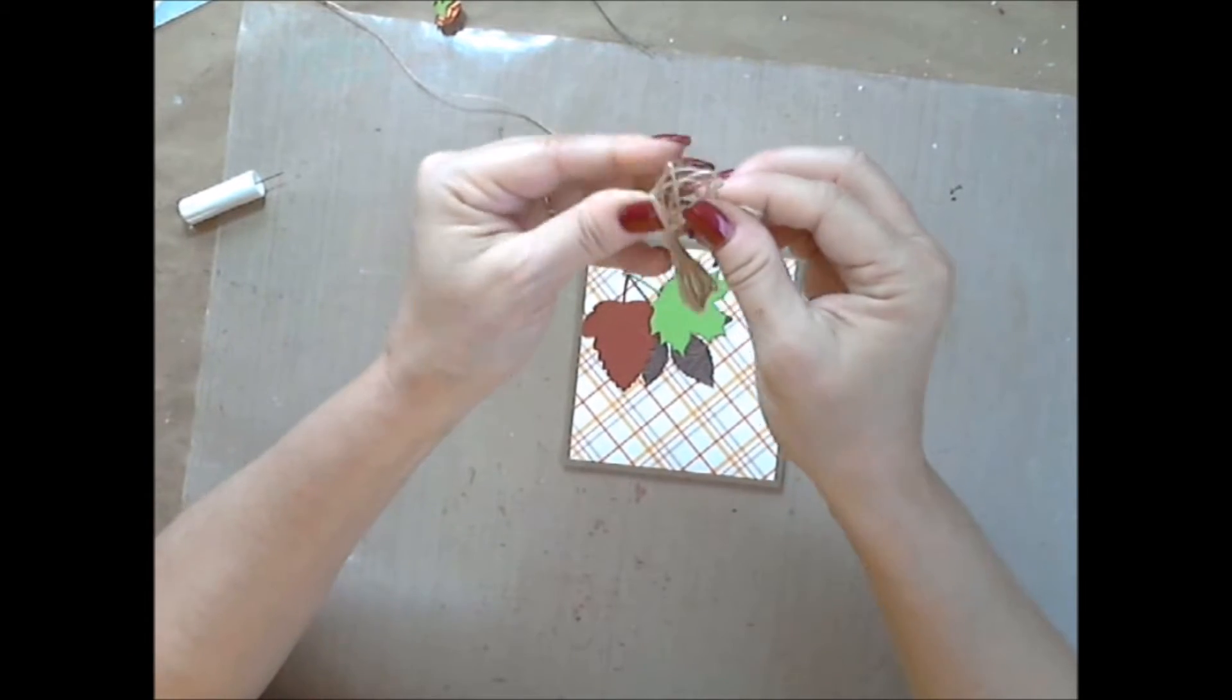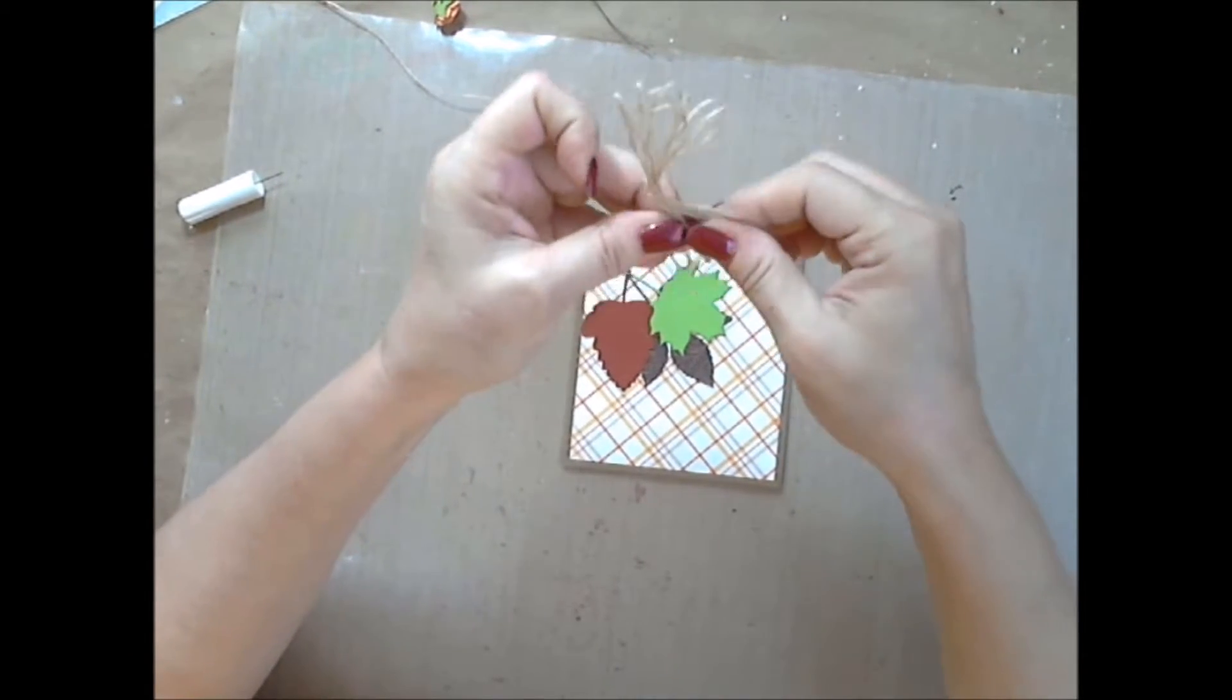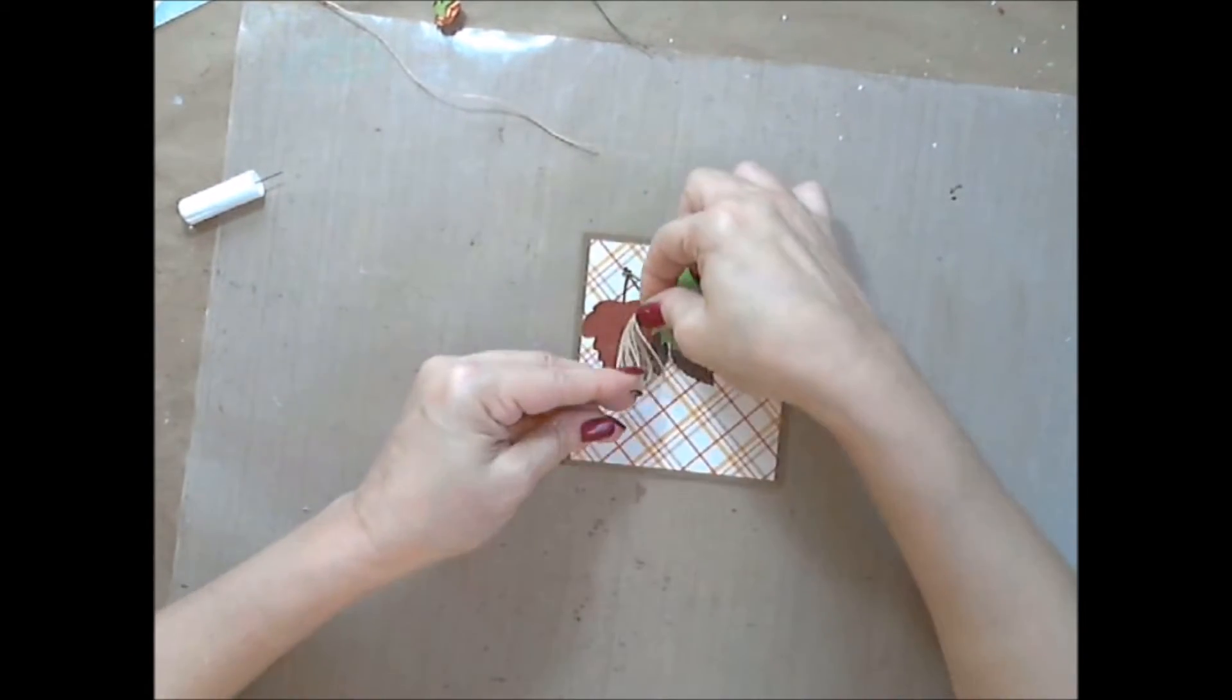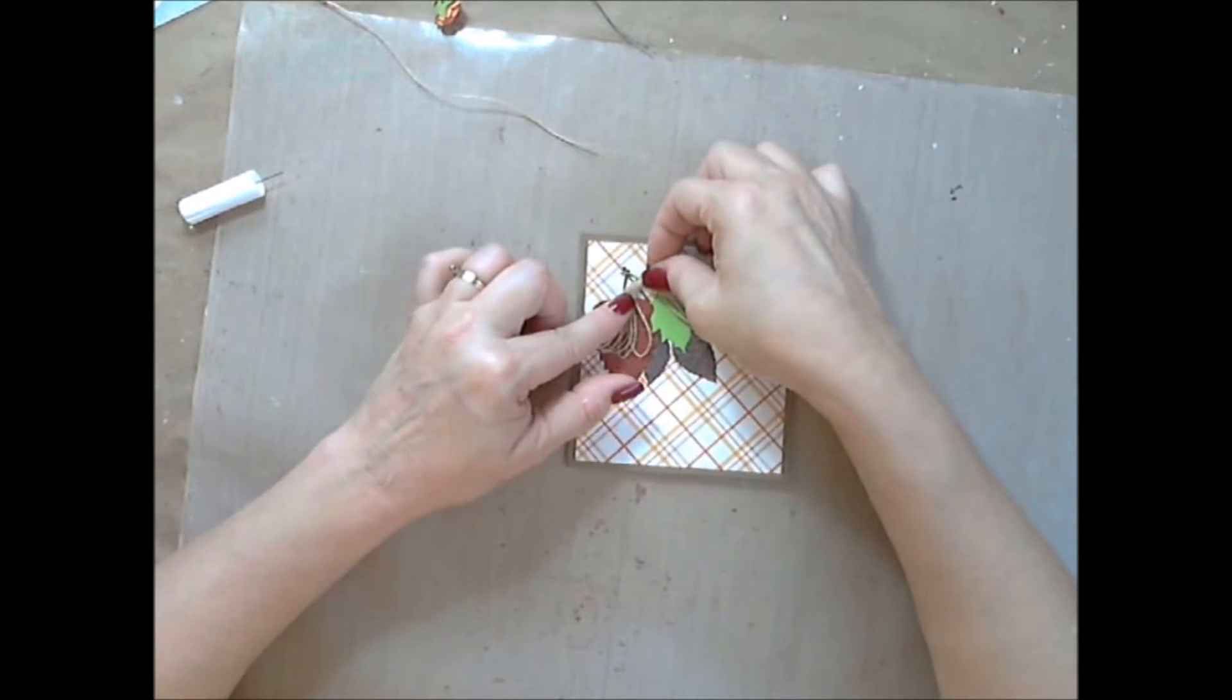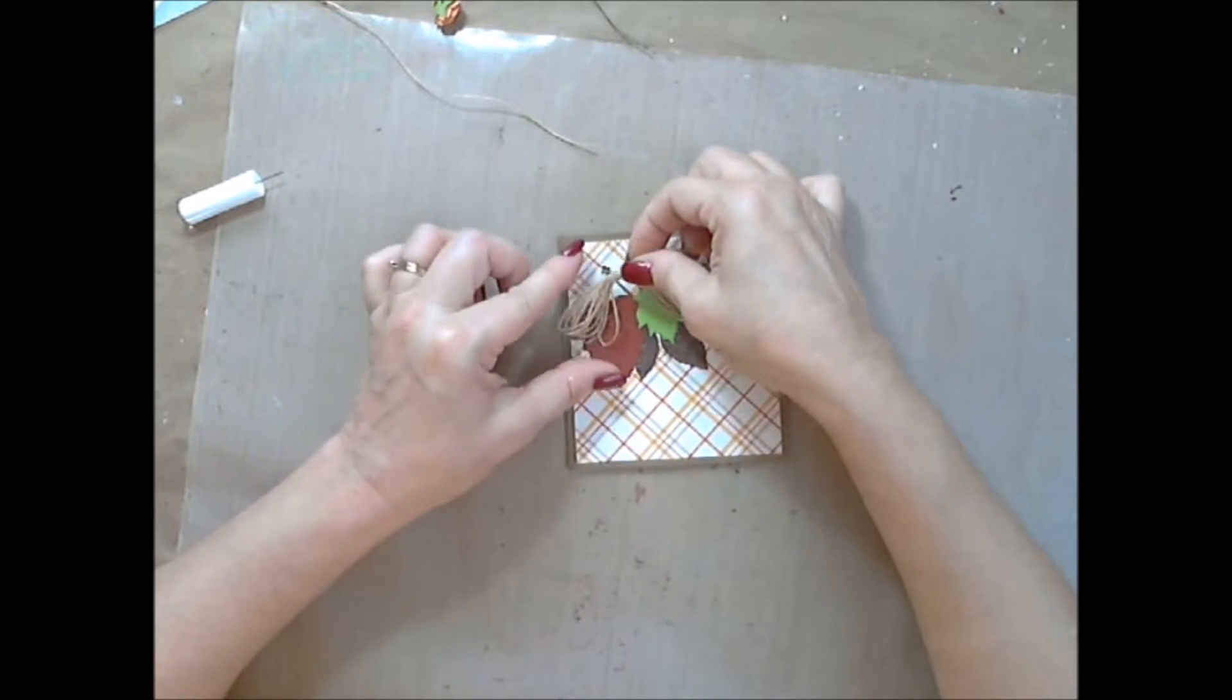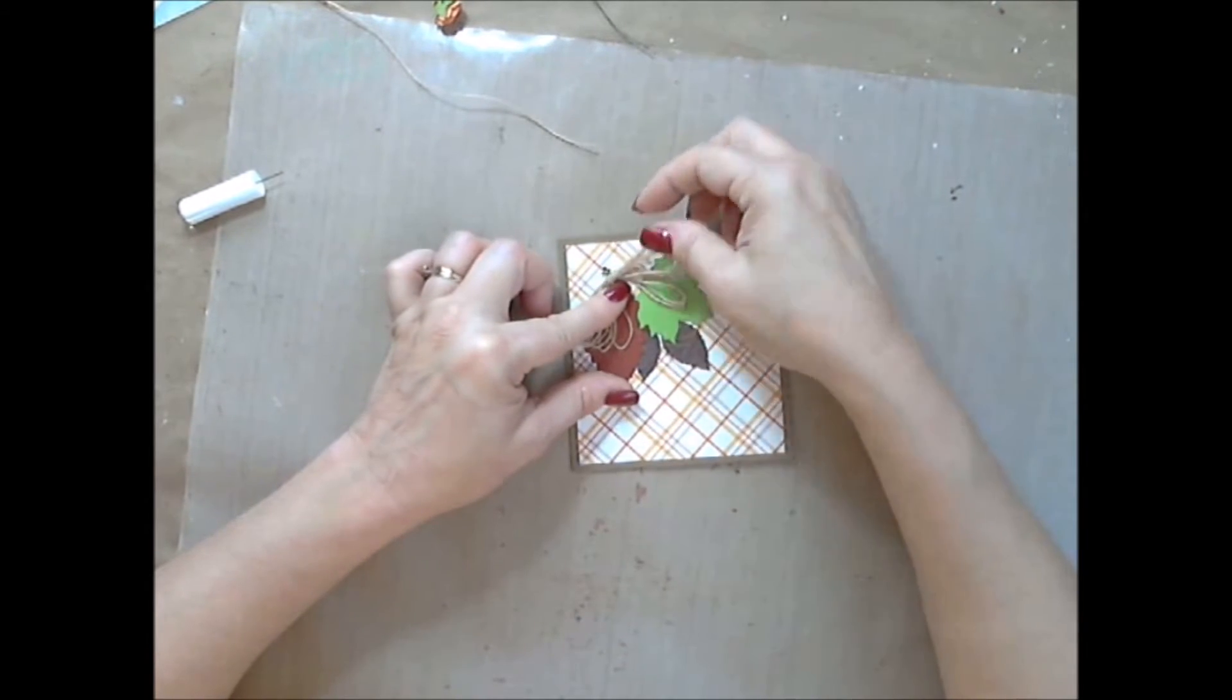Here I'm taking some twine that I had wrapped up and I'm pulling it apart to make it fuller. I'm attaching that at the top of the cluster of leaves that I've glued down.